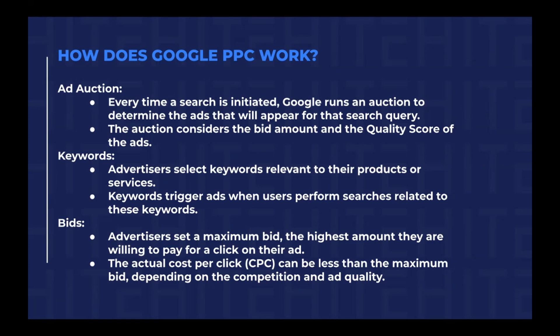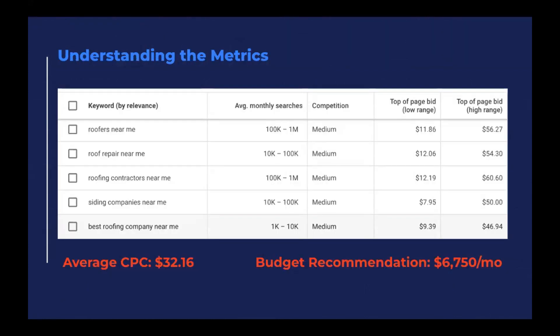There are a few different factors that go into the bidding strategy. We look at advertisers setting the maximum bid amount, understanding the cost per click, and understanding the competition. There's a really great free tool that Google gives us called the Keyword Planner — anyone can go in there. This is where I pulled this data from. It's the Google Keyword Planner — you can use it to look at the competition and the keywords in your market.